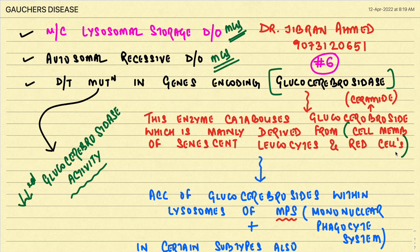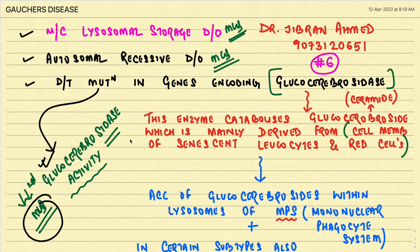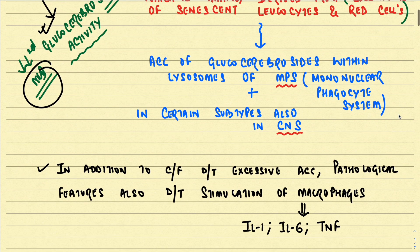In Gaucher's disease there is reduced glucocerebrosidase activity — very important for MCQs. Normally this enzyme catabolizes glucocerebroside, and in the absence of this activity there is accumulation of glucocerebroside within the lysosomes of the mononuclear phagocyte system, which includes the liver, spleen, and lymph nodes.